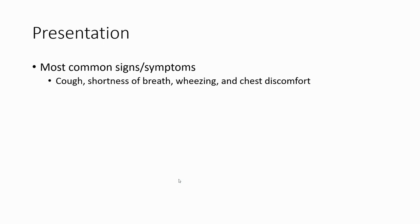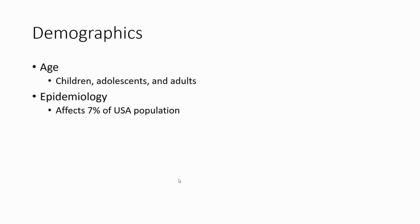The most common signs and symptoms are coughing, shortness of breath, wheezing, and chest discomfort. Regarding demography, asthma can happen in all ages — in children as well as adults. The epidemiology shows it affects 7% of the USA population.